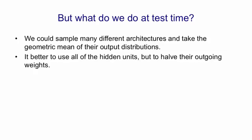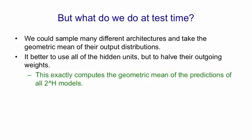We use all of the hidden units, but we halve their outgoing weights, so they have the same expected effect as they did when we were sampling. It turns out that using all of the hidden units with half their outgoing weights exactly computes the geometric mean of the predictions that all 2 to the H models would have used, provided we're using a softmax output group.